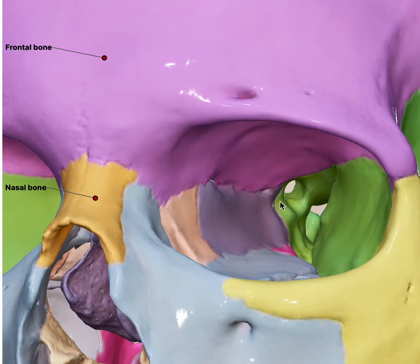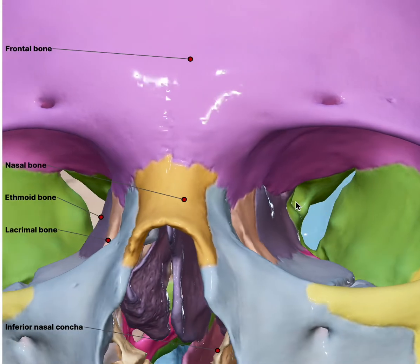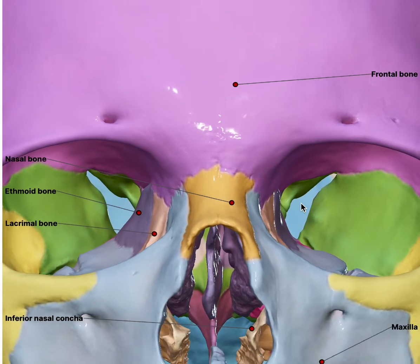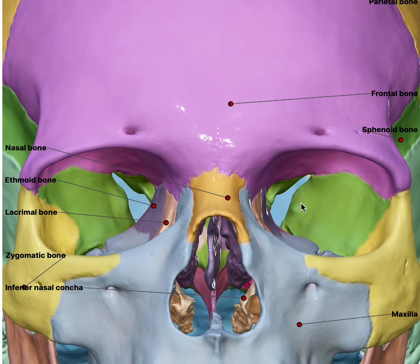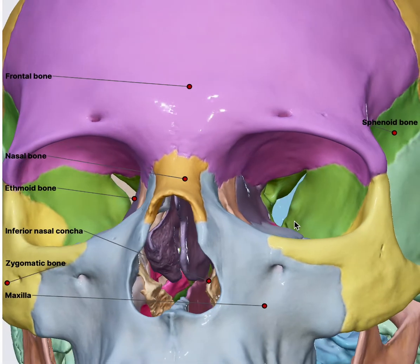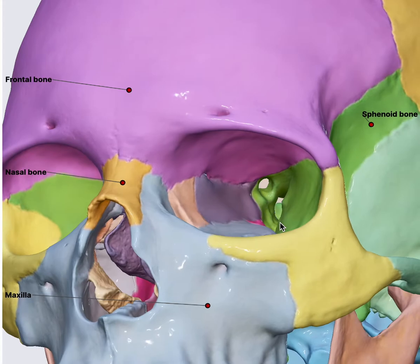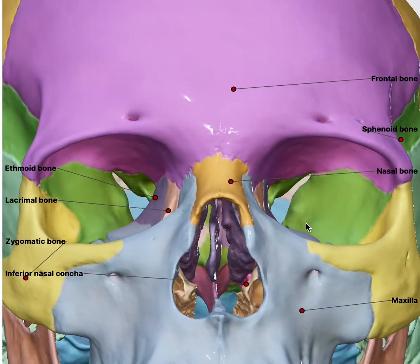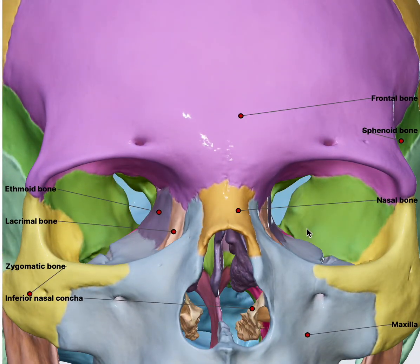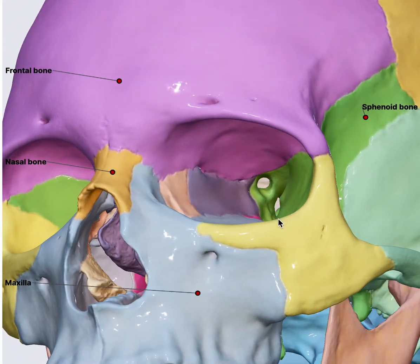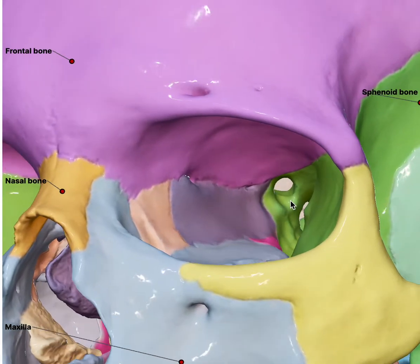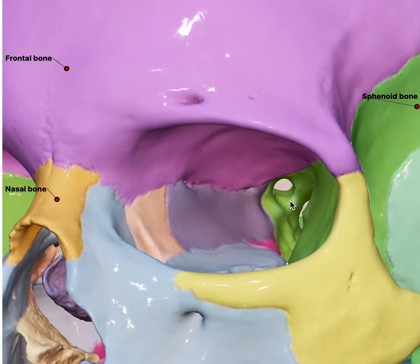So we're done with the sphenoid. We need to have these images in our brain and develop a special orientation when looking at scans or when we operate. Surgery requires a lot of imagination, and that's why virtual or spatial orientation is necessary — it allows us to understand exactly where we are.